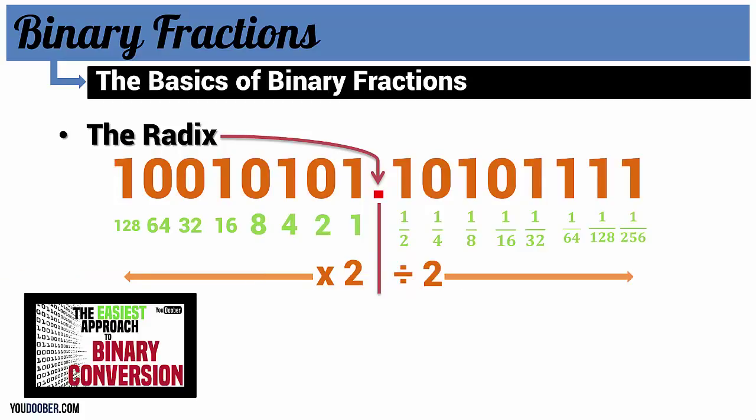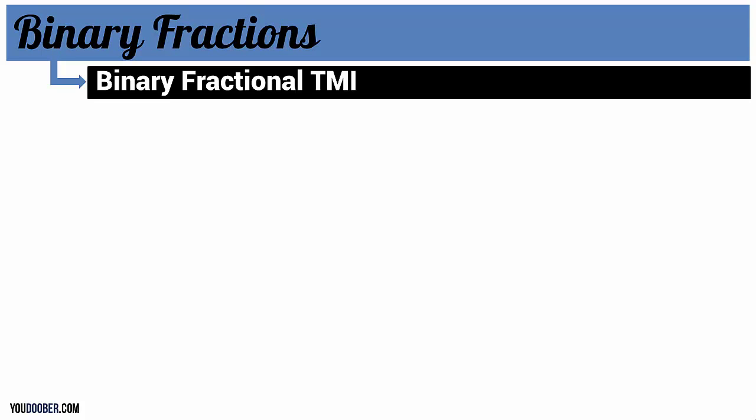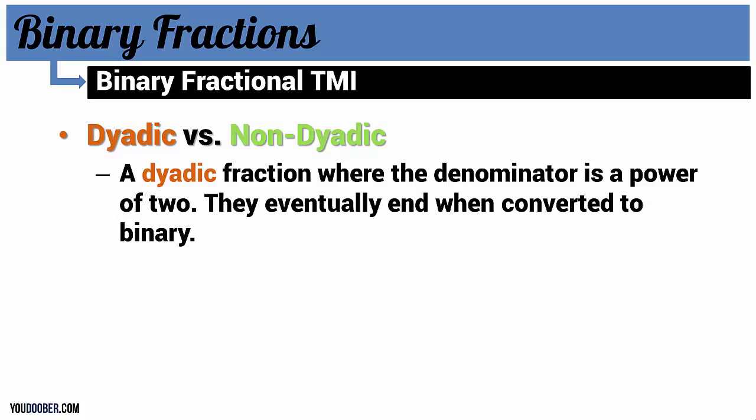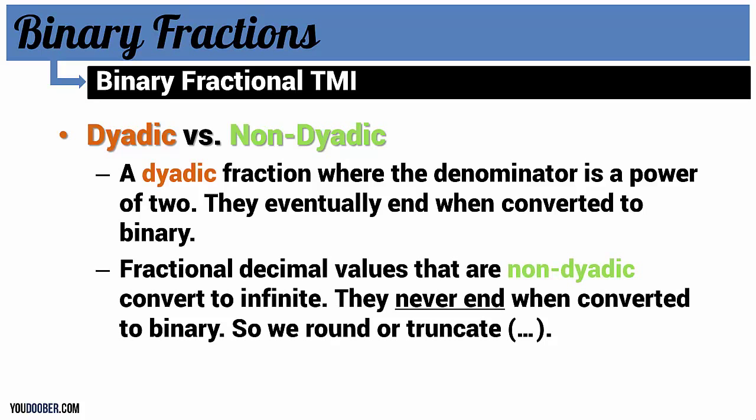And that's going to be our focus in fractions. There is dyadic versus non-dyadic, right? There's two types where a dyadic fraction has a denominator with a power of two and they eventually end when you convert to binary. A non-dyadic fraction converts to infinite - they never end when converted to binary, so we round them or truncate those answers.